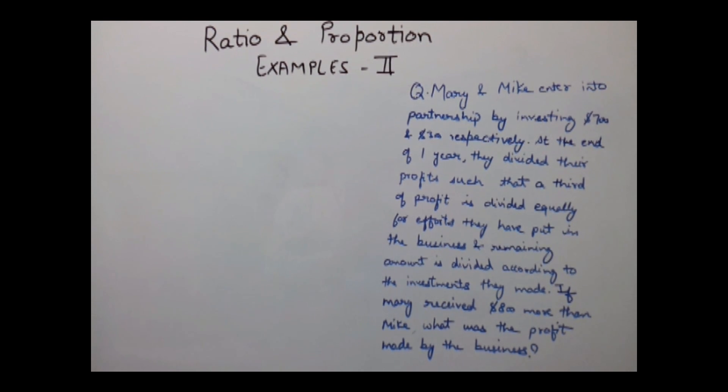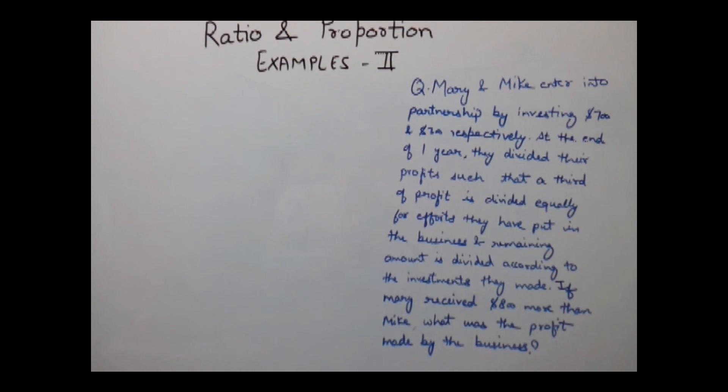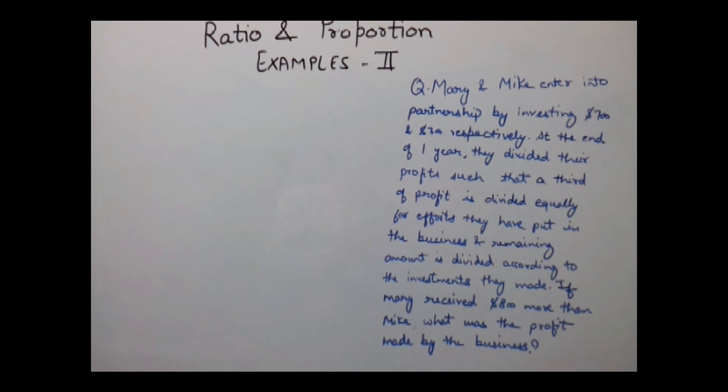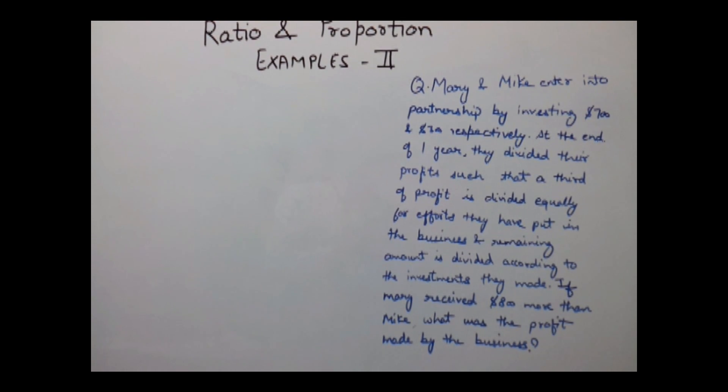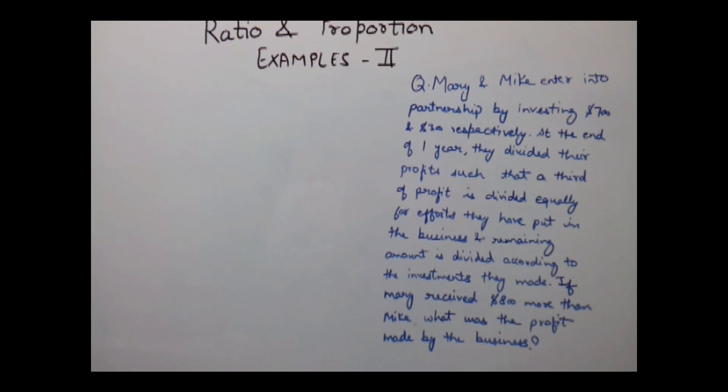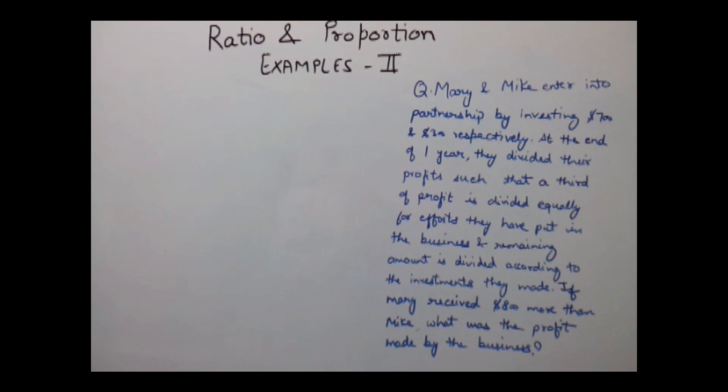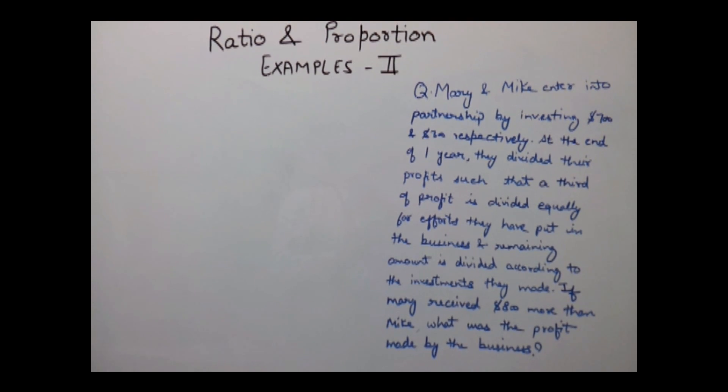At the end of one year, they divided their profits such that a third of profit is divided equally for effort they put in the business, and remaining amount is divided according to the investments they made. If Mary received $800 more than Mike, what was the profit made by the business?